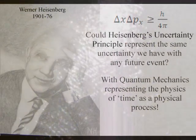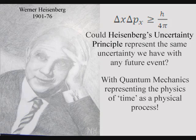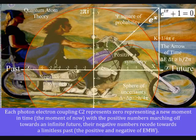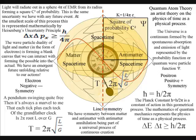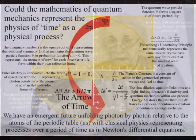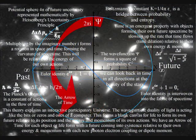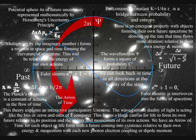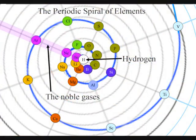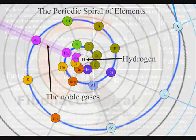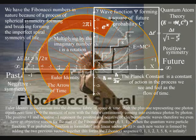The second postulate is that Heisenberg's uncertainty principle, which is formed by the probability function, is the same uncertainty we have with any future event. This process of continuous change or energy exchange, which we see and feel as the flow of time, is totally universal and interactive — from the largest object to the smallest creature, right down to the smallest element of the periodic table, which will slow the rate that time flows, forming a curvature of space-time relative to its own energy or mass.